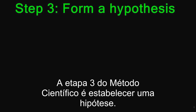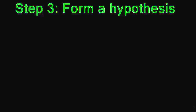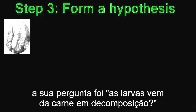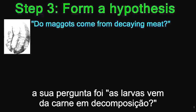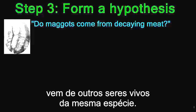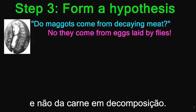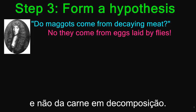Step 3 of the scientific method is forming a hypothesis — a possible solution to your question. In Redi's case, his question was: do maggots come from decaying meat? Based on his research, he had noticed that living things come from other living things of the same kind. So he hypothesized that maggots come from eggs laid by flies, not from decaying meat.